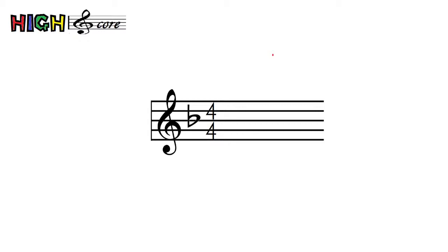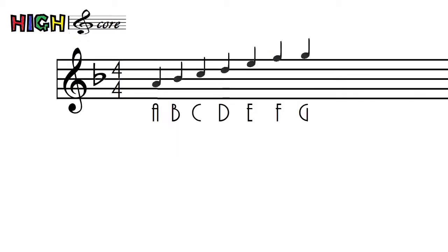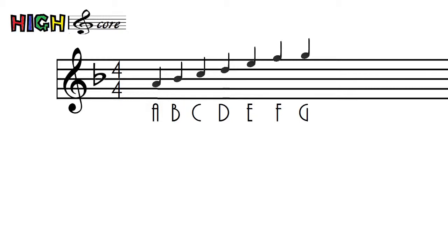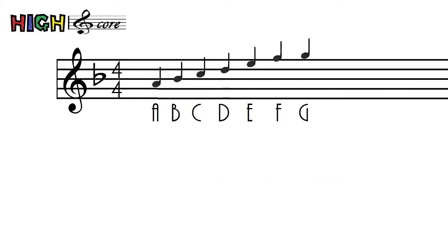As most of you probably already know, music has seven notes, A through G. When you reach the next letter, you're back at A again. As a common example, think Do, Re, Mi, Fa, So, La, Ti, Do — although the Do in that song is actually a C, but we'll get to that.